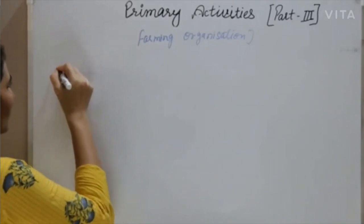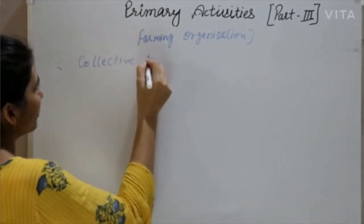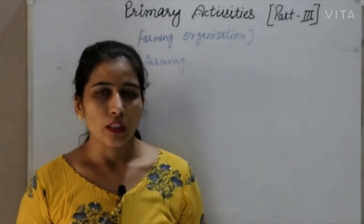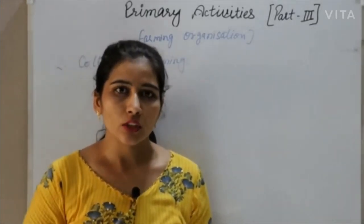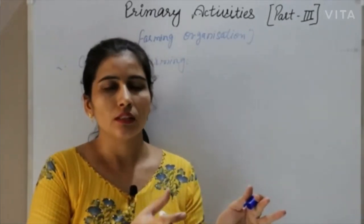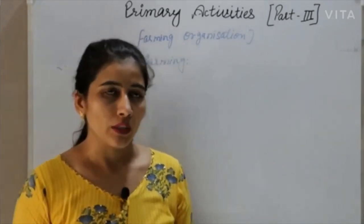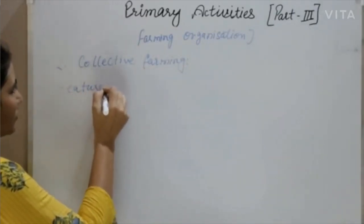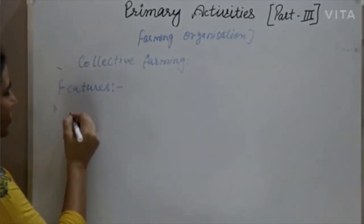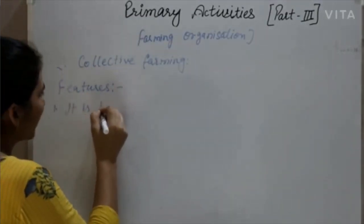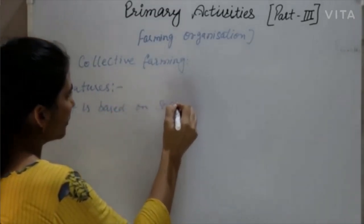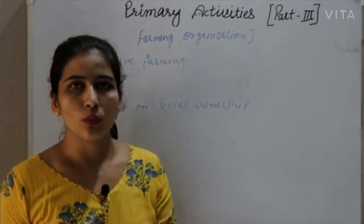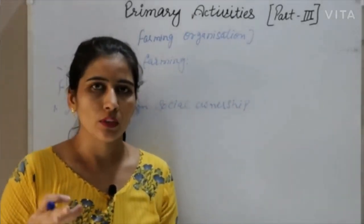The second type in farming organization is collective farming. Collective farming refers to various types of farming in which multiple farmers run their holdings as a joint enterprise. Its features include: first, it is based on social ownership — no work is done individually, all work is social.